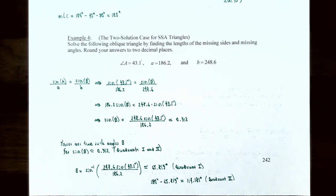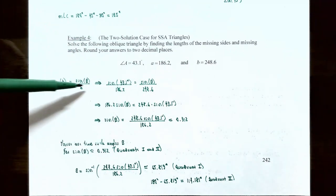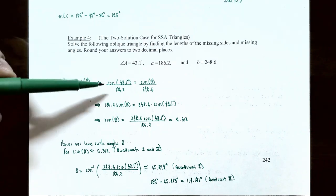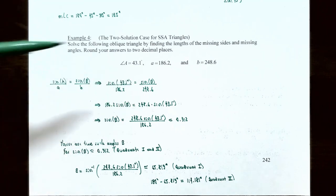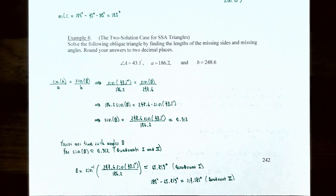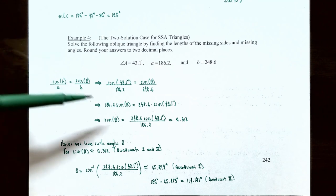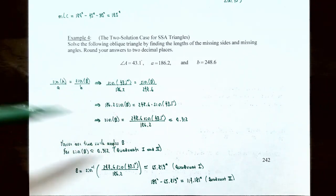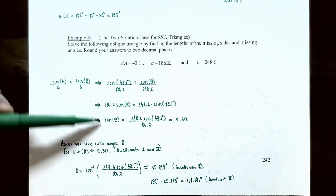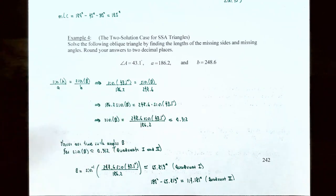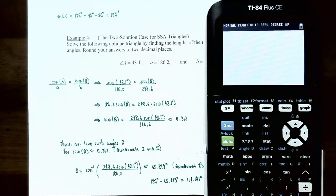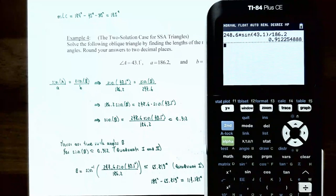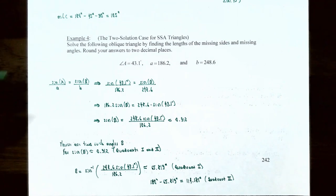We know angle A = 43.1°, a = 186.2, and b = 248.6, so sin(43.1°)/186.2 = sin(B)/248.6. Cross-multiplying: 186.2·sin(B) = 248.6·sin(43.1°). Dividing both sides by 186.2: sin(B) = 248.6·sin(43.1°)/186.2 ≈ 0.912. Notice that sin(B) = 0.912 has two possible angles for B, since the sine function is positive in both quadrant one and quadrant two.